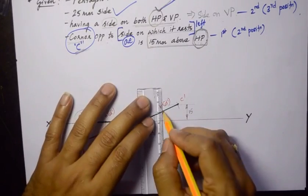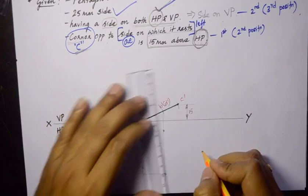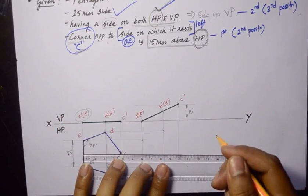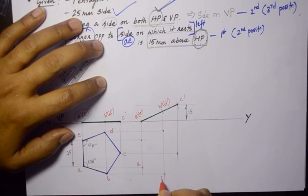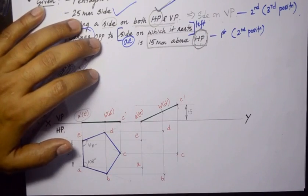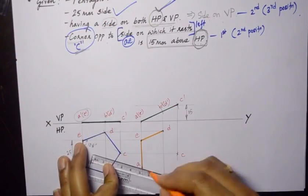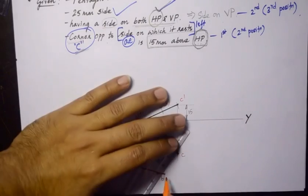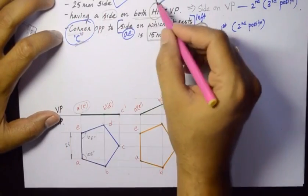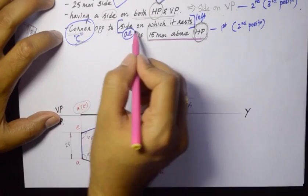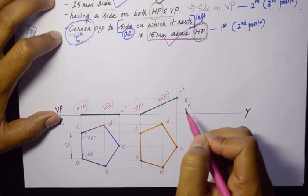We can complete this second position by drawing the projection lines. Checking the checklist: we have done the pentagon laminar of 25 mm side having a side on HP, and we have made the corner opposite to the side on which it rests — point C' — 15 mm above the horizontal plane.